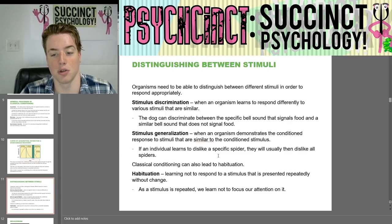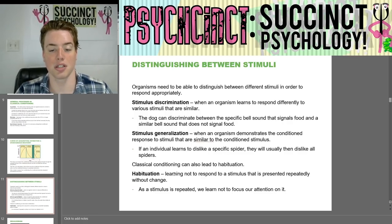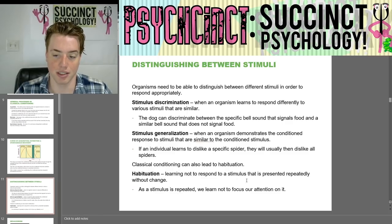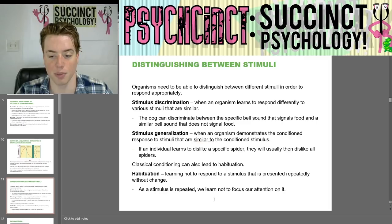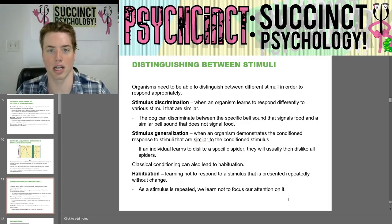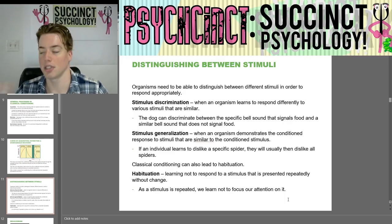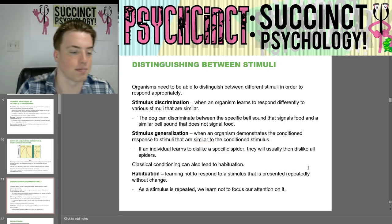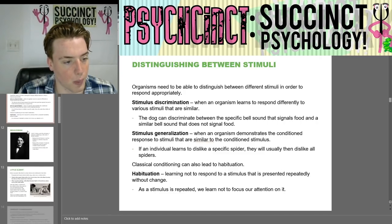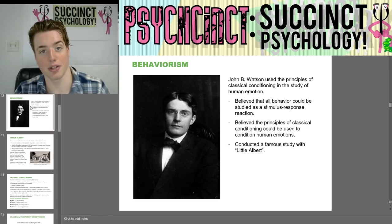Classical conditioning can also lead to habituation — learning not to respond to a stimulus that is presented repeatedly without change. As a stimulus is repeated, we learn not to focus our attention on it. For example, the whirring of a fan: when you first walk into a room, you might notice the loud fan, but over time you habituate to it, you get used to it, and you're no longer aware of that stimulus — it becomes background noise.